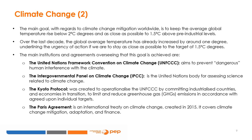The main goal with regards to climate change mitigation worldwide is to keep the average global temperature rise well below 2 degrees Celsius and as close as possible to 1.5 degrees Celsius above pre-industrial levels. The global average temperature has already increased by around 1 degree over the last decade, underlining the urgency of action. The main institutions and agreements overseeing that this goal is achieved include the United Nations Framework Convention on Climate Change, UNFCCC, which aims to prevent dangerous human interference with the climate. It entered into force on March 21, 1994.